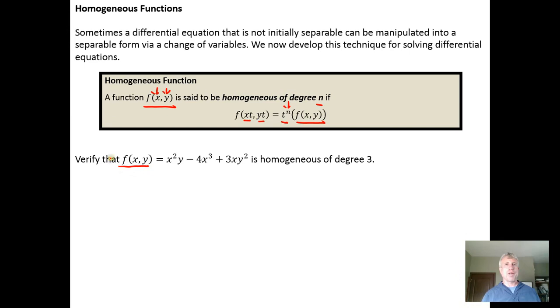So here's an example. We want to verify that this function is homogeneous of degree 3. So what we do is we start by plugging in xt and yt for the x and the y. We then substitute the xt and the yt into the original function.